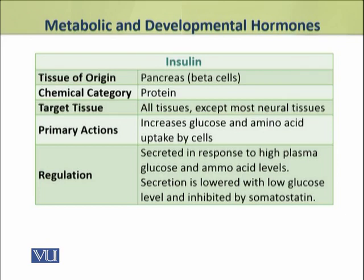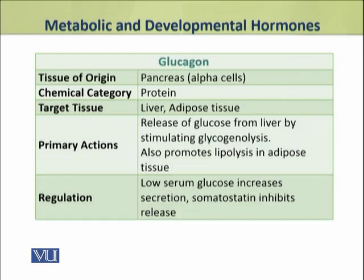Insulin's secretion is inhibited by the somatostatin hormone. Glucagon is a protein hormone whose target tissues are the liver and adipose tissue. Its primary action is to stimulate glycogenolysis. It also promotes lipolysis in the adipose tissues.